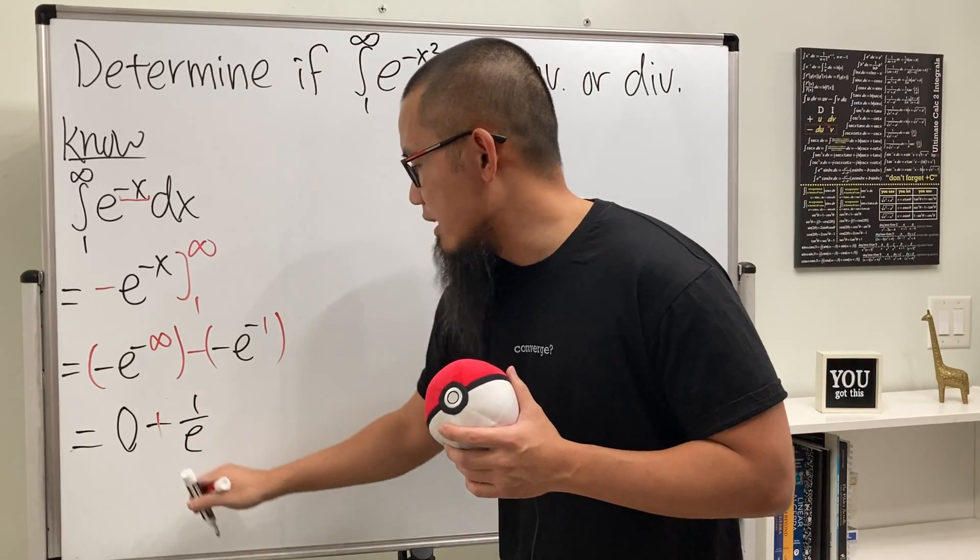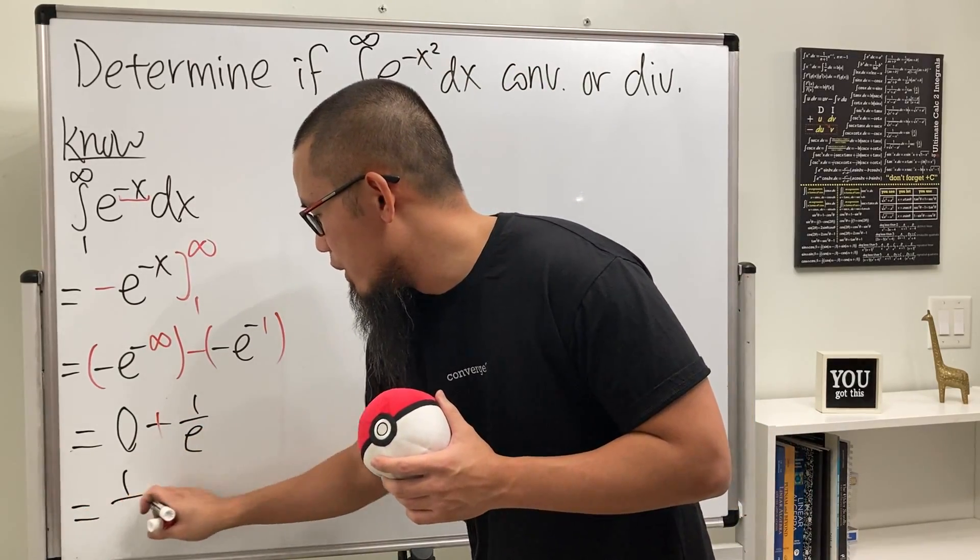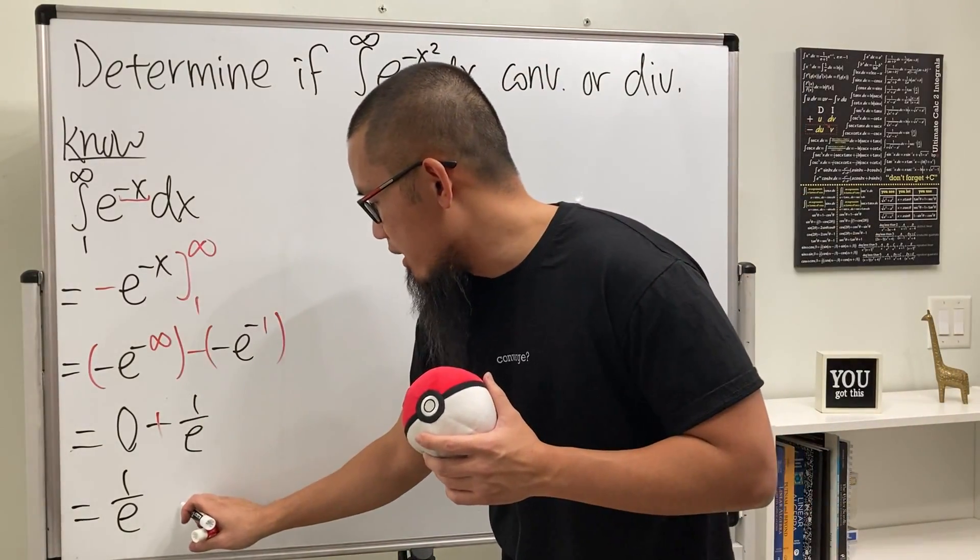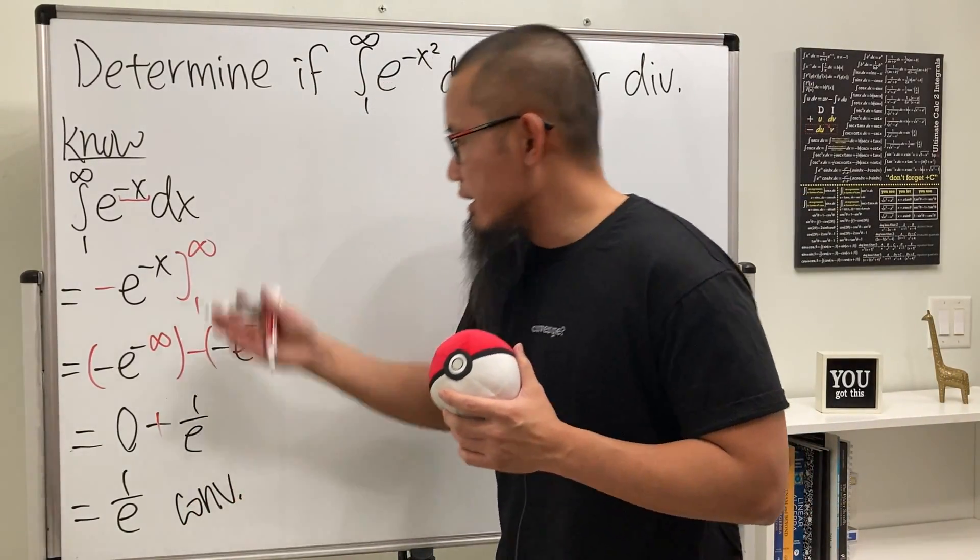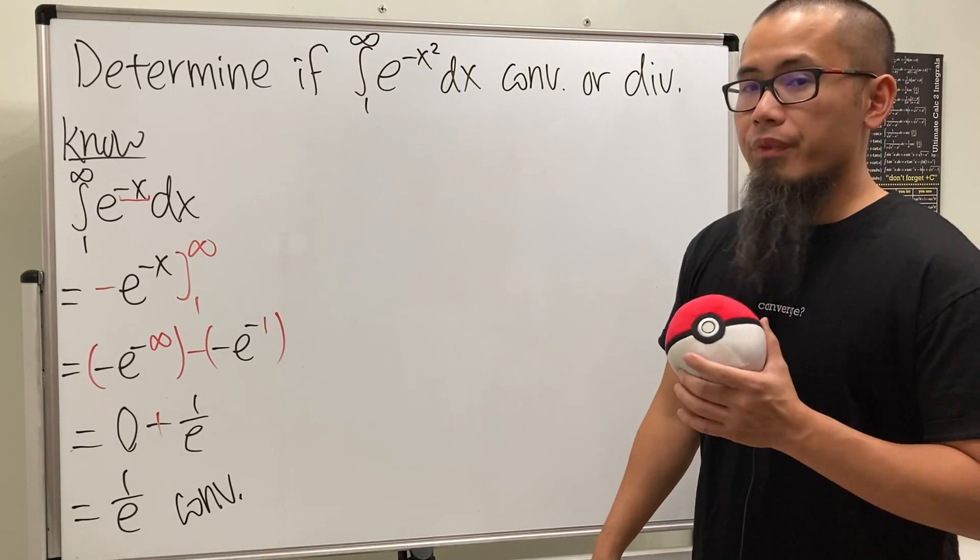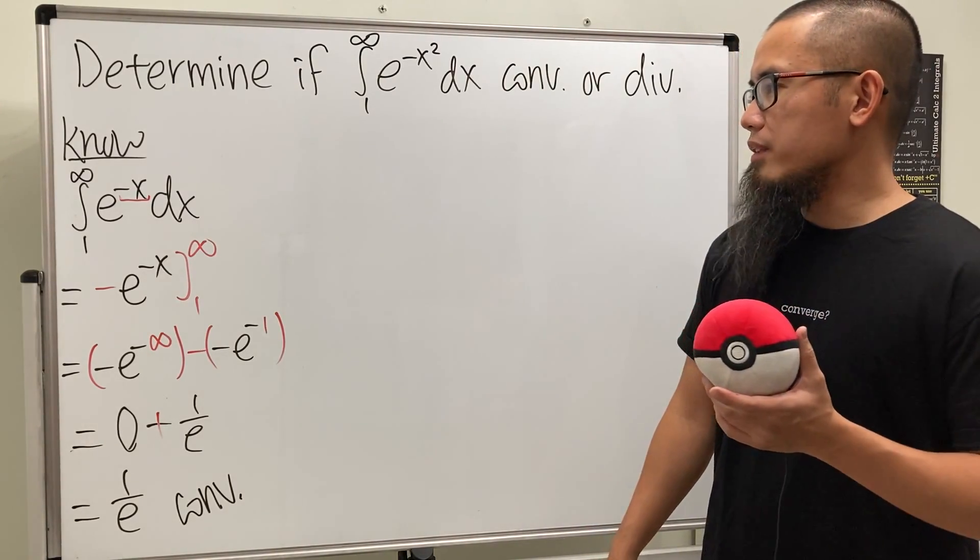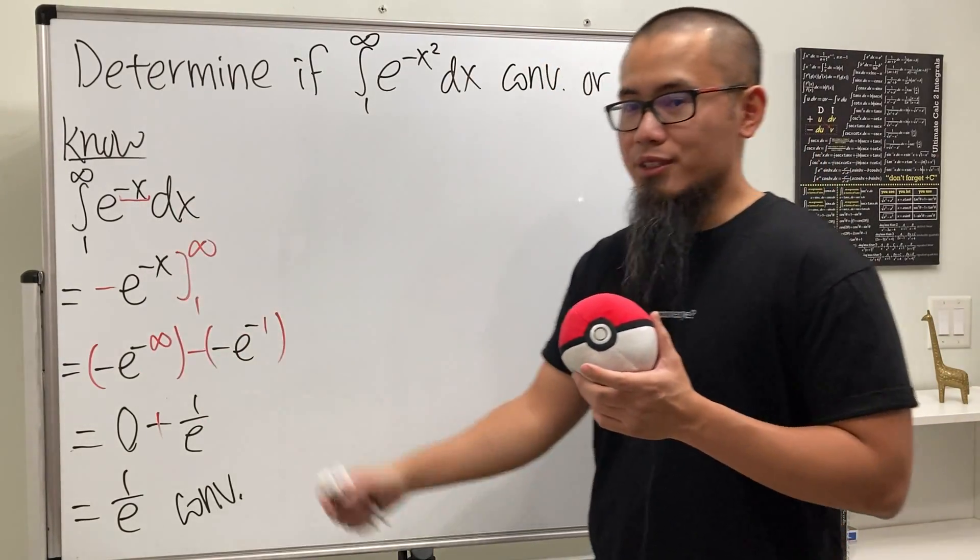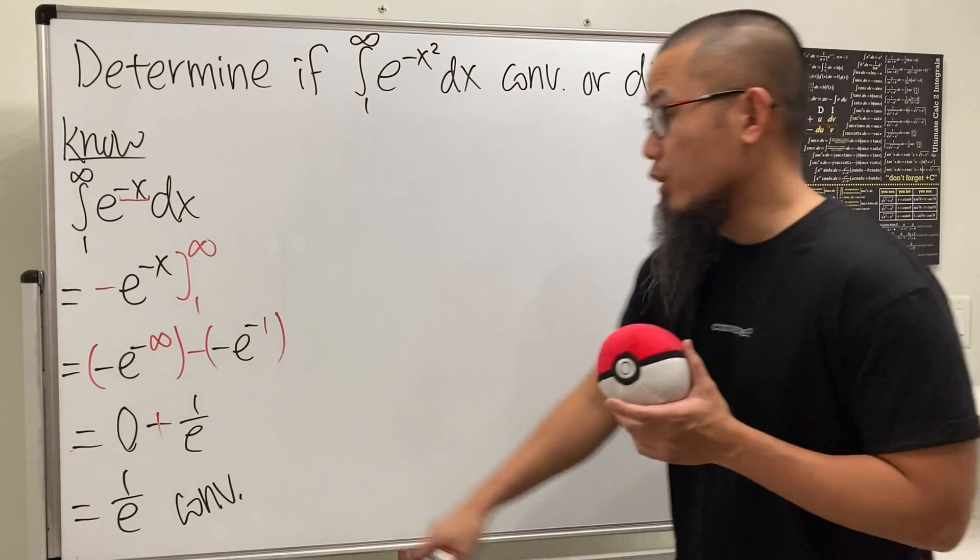So you see, this right here gives us a finite value, which is 1 over e. Therefore, we can clearly see that this converges. Unfortunately, we do not have the p integral that can help us out with this because this is an exponential case. So just go ahead and integrate that.